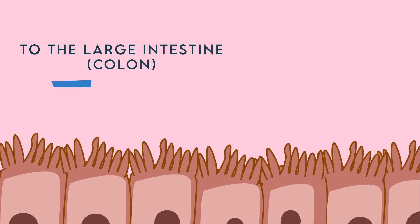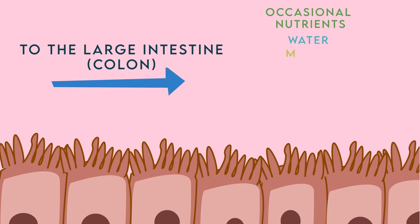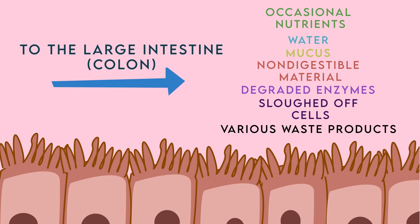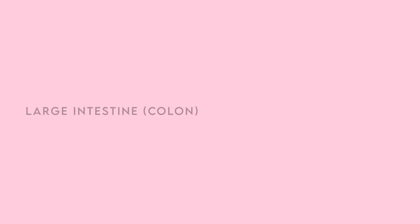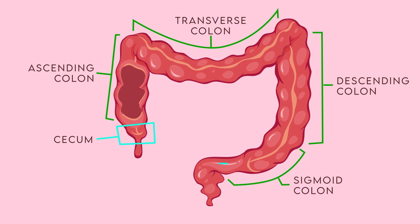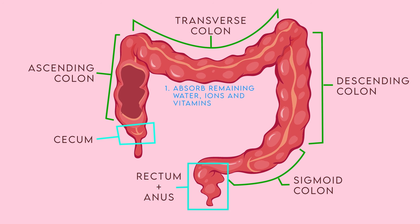What reaches the end of the small intestine is a mass of occasional nutrients, some water, mucus, non-digestible material, degraded enzymes, sloughed off cells, and various waste products. This mass enters the large intestine, also known as the colon, for final modifications and compaction before excretion. The large intestine consists of the cecum and ascending, transverse, descending, and sigmoid colons, before leading into the rectum and anus. Its primary functions are threefold: to absorb some remaining water, ions, and vitamins; to utilize local bacterial flora to ferment and chemically digest any remaining carbohydrates and absorb the products (with waste products excreted via flatulence); and to form feces to be excreted.